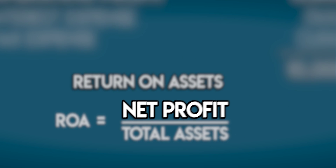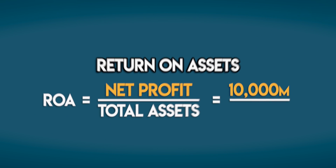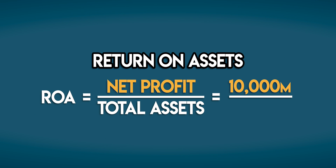We can find net profit on the income statement. This income statement summarizes Edison's revenues and expenses over a financial year. Net profit is on the bottom line — it's the profit left over after deducting all business expenses. For the year ended December 31st, Edison generated 10 billion dollars in net profit. So let's pop that into our return on assets calculation.